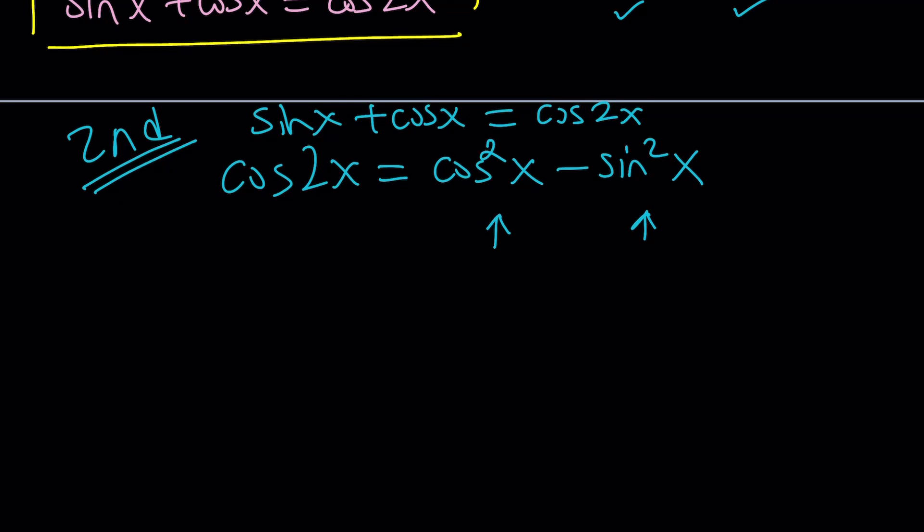You see, if you know where the formulas come from, you don't all have to memorize them, but you have to memorize some. Okay, great. So now let's go ahead and replace the cosine 2x on the right-hand side with this. That's going to give us cosine squared x. Actually, let me keep the left-hand side on the left-hand side. So sine x plus cosine x equals cosine of 2x, which is cosine squared x minus sine squared x. Awesome.